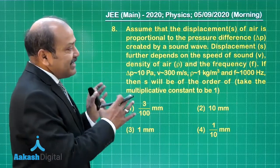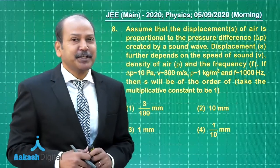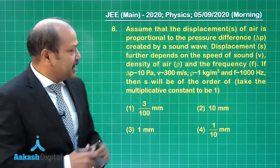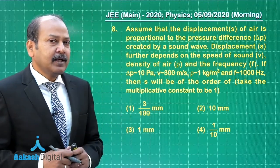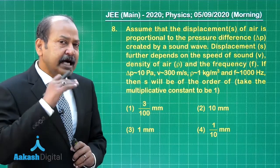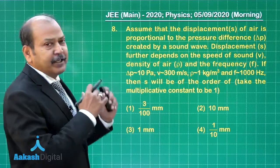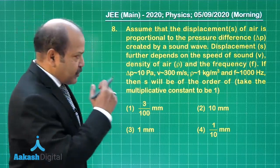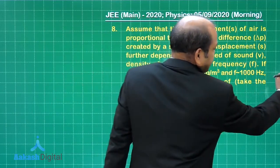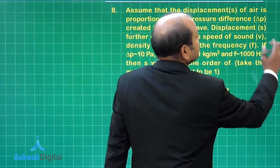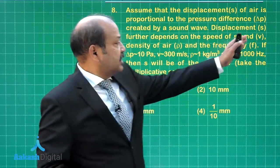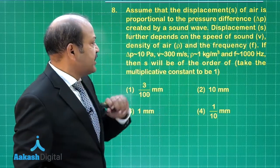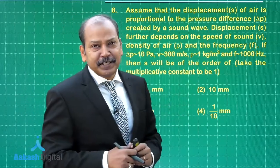The question is related to propagation of sound wave but in this particular case we have to employ the method of dimensions, the dimensional analysis to find the relation. So according to the question, s is directly proportional to Δp and it also depends on variables like the speed v, the density ρ and the frequency f.